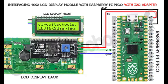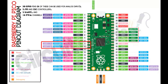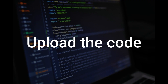The data pins of the LCD module, SDA and SCL, are connected to GP8 pin 11 and GP9 pin 12 of the Pico board, which act as SDA and SCL as you can see from the Raspberry Pi Pico pinout diagram.